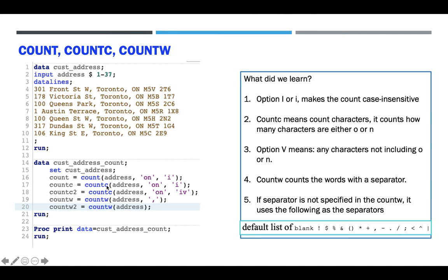The only difference with COUNTC is that the function name has the letter 'C'. COUNTC will not count a substring — it counts the individual characters 'o' and 'n'. So for line number 4, it checks how many o's there are and how many n's there are, and adds them together. The 'i' modifier again makes it case-insensitive; you can remove the 'i' if you want case-sensitive behavior.